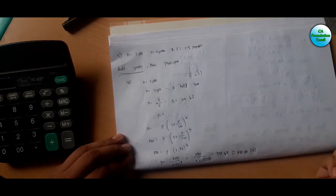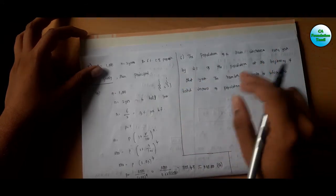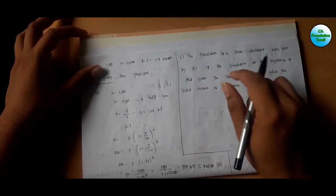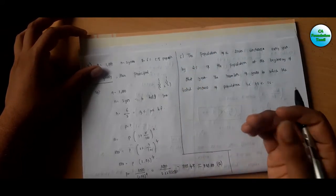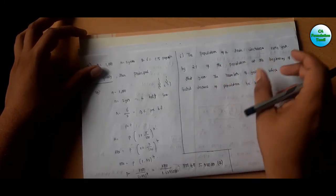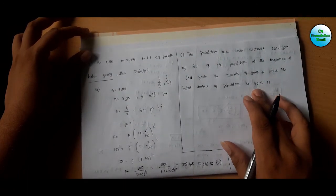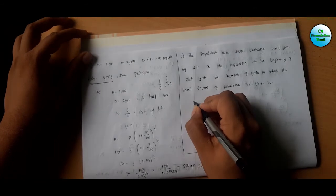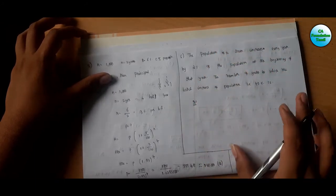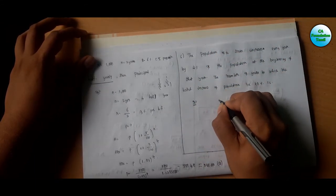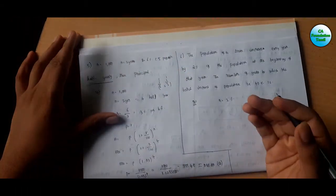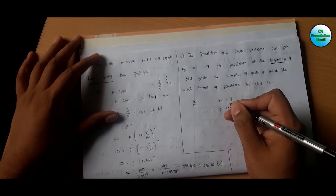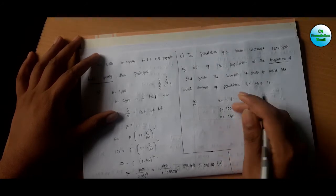The next problem, number 7: The population of a town increases every year by 2% of the population at the beginning of the year. We need to find the number of years by which the total increase of population is 40%. So population increases at 2% per year on the beginning-of-year population, and we need the number of years for a 40% total increase.